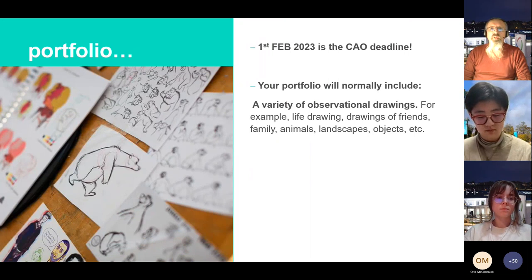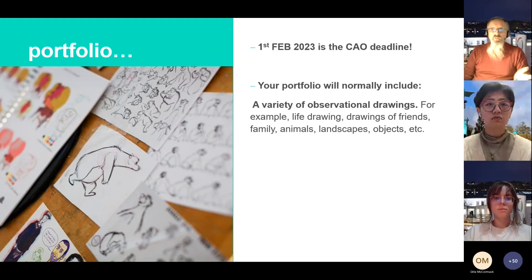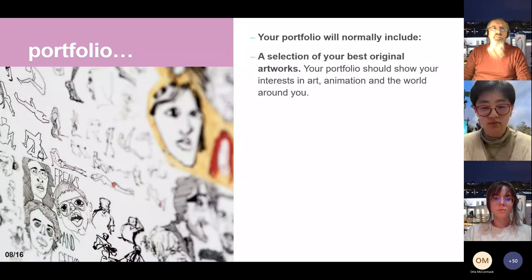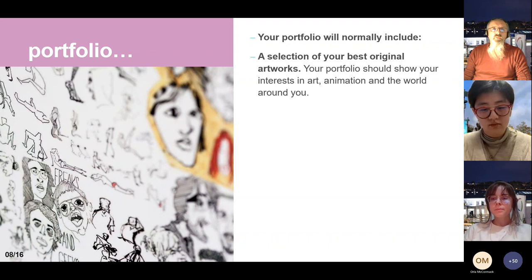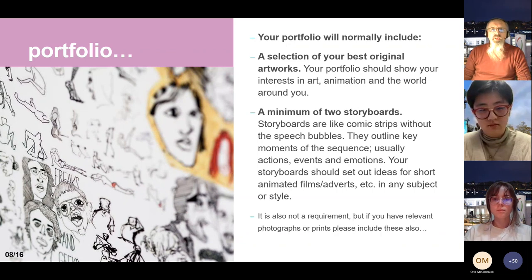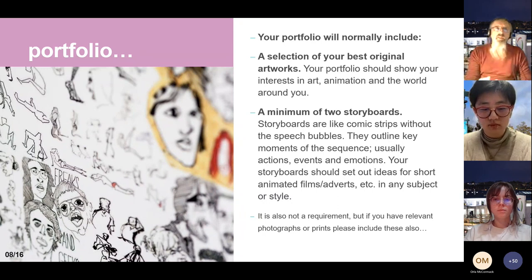The 1st of February 2023 is the CAO deadline — you need to elect to do animation at IADT. Your portfolio should include observational drawings, creative work, notebooks, and a selection of your best original artworks. It should show your interest in art, animation, and the world around you, plus a minimum of two storyboards. If you have relevant photographs or 3D work, photograph it in nice light and include it. There are guidelines on the website about photographing and digitizing your work.